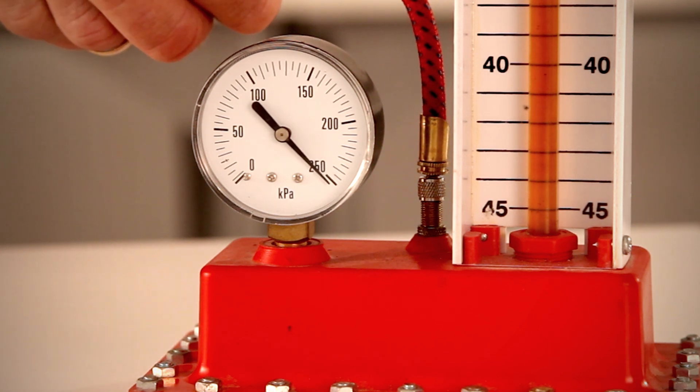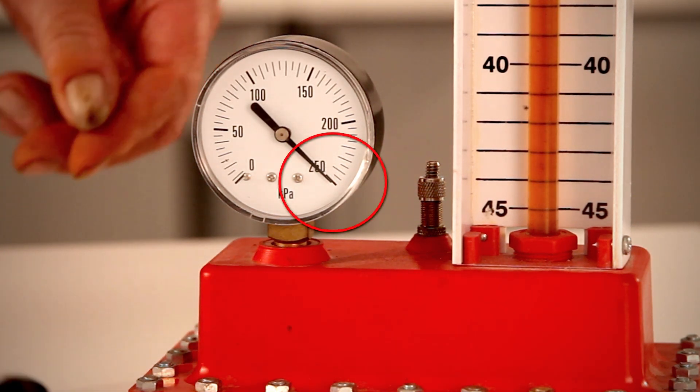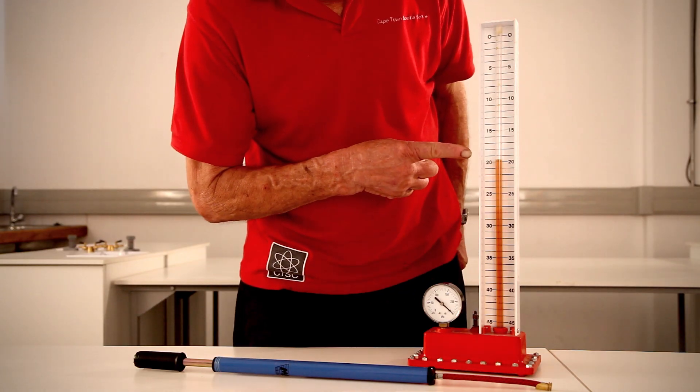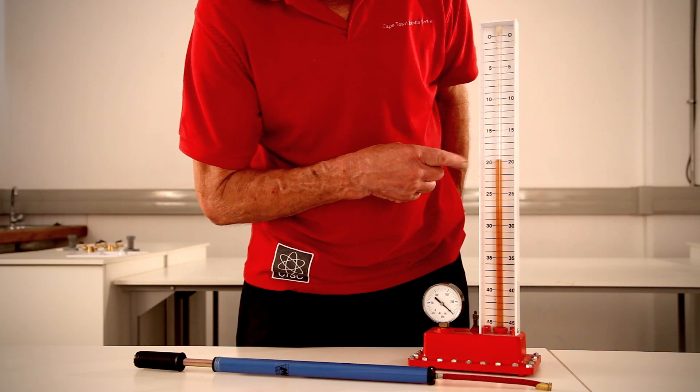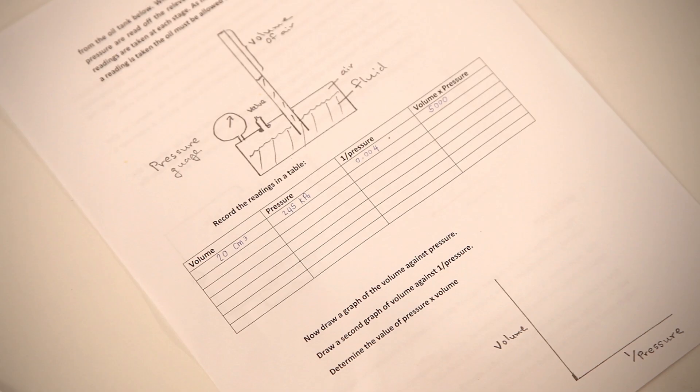Subject the air to a pressure of 250 kilopascals and then take the readings with the air compressed to a smaller volume in the tube. The volume of air and the pressure it is subjected to are recorded.